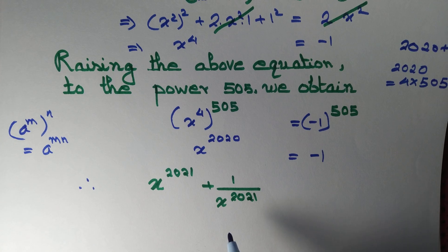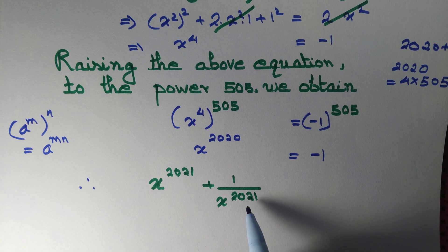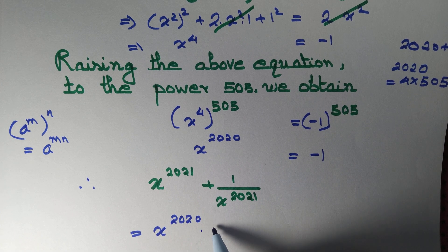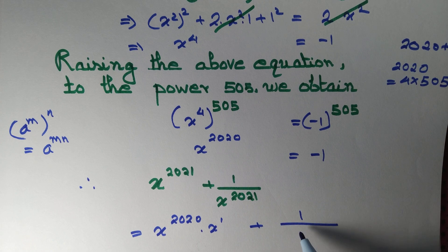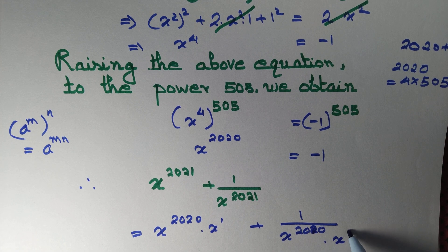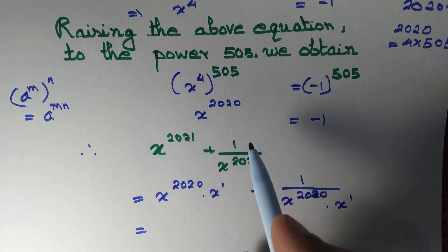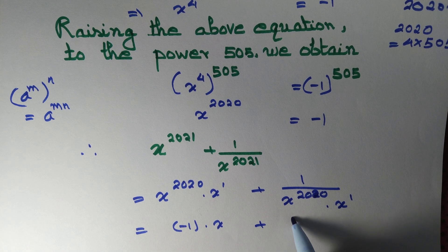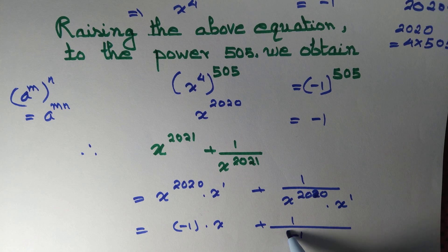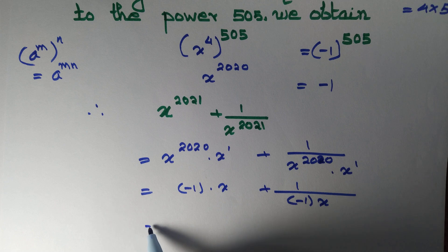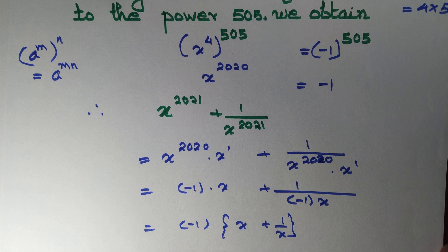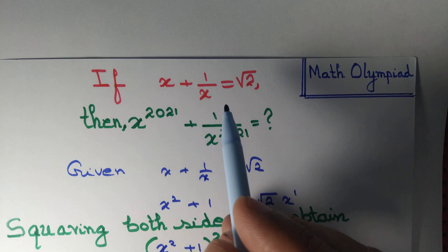Therefore, x to the power 2021 plus 1 by x to the power 2021, by the law of indices, equals x to the power 2020 times x plus x to the power 2020 times 1 by x. Since x to the power 2020 is minus 1, we get minus 1 times x plus 1 by x. Taking minus 1 as common factor gives minus 1 times (x plus 1 by x).